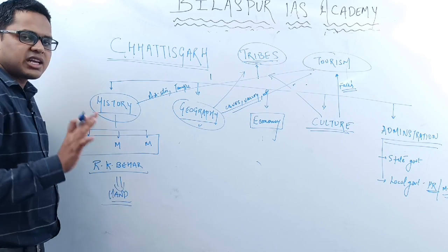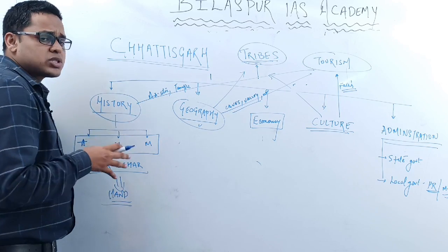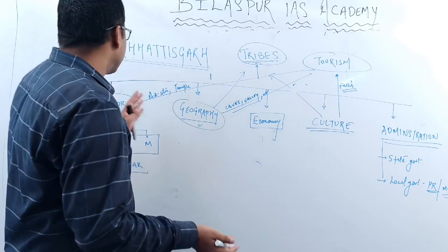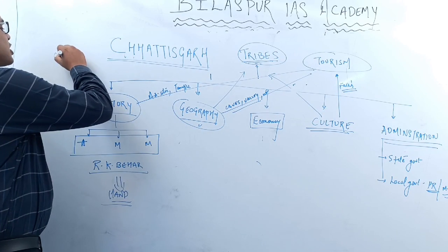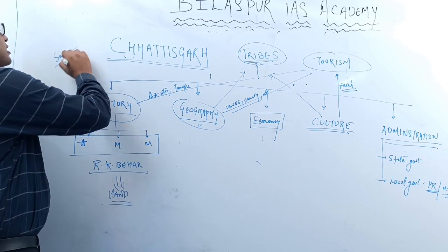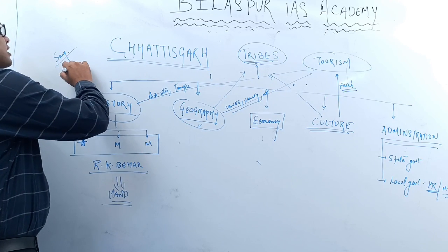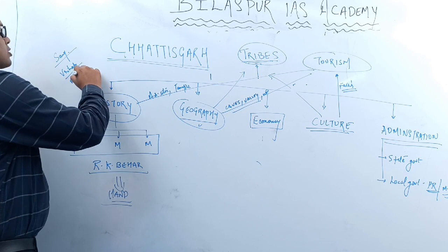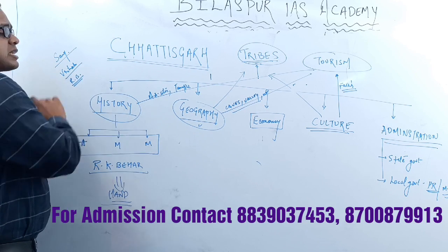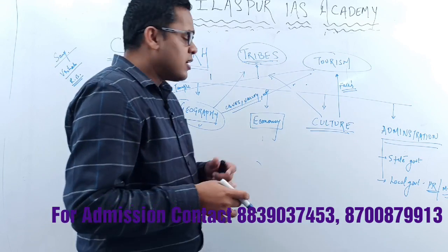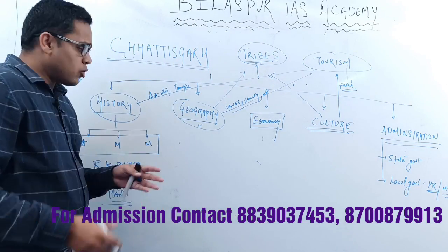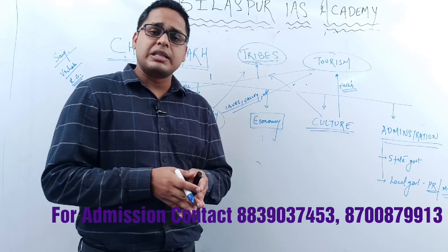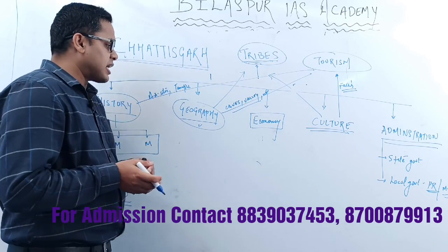I will cover all the different books. There are many books like Samagra Chhattisgarh — again in Hindi. There is a book called Vrihat Sandarbh — again in Hindi. And the book Ram Kumar Bihar — also in Hindi. There are many books in Hindi, including these three. For geography, we have LN Verma, published by the Hindi Granth Academy. For economy, you will get the Economic Survey of Chhattisgarh, but that is also published in Hindi.